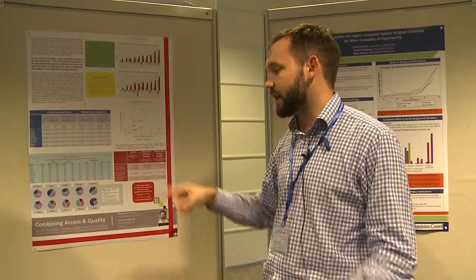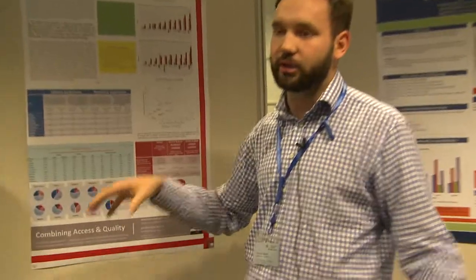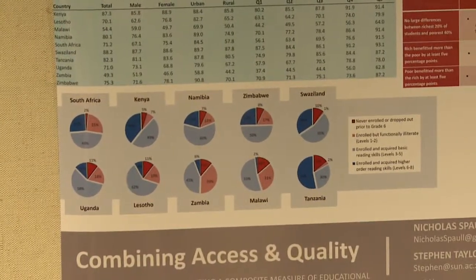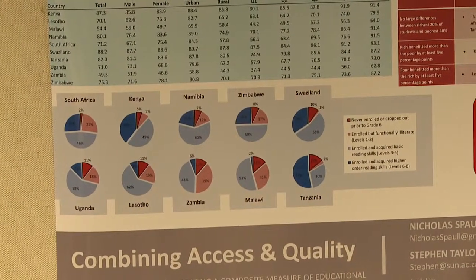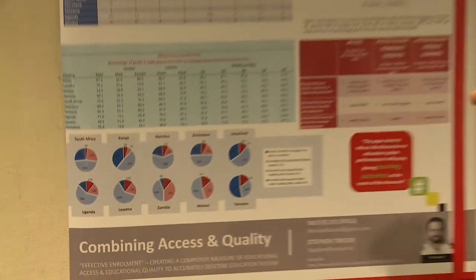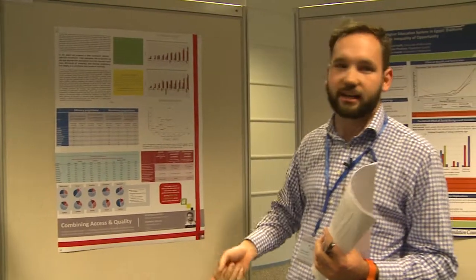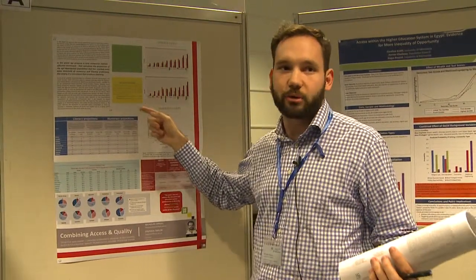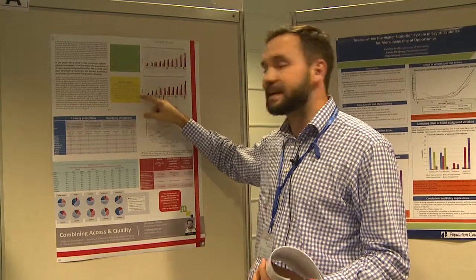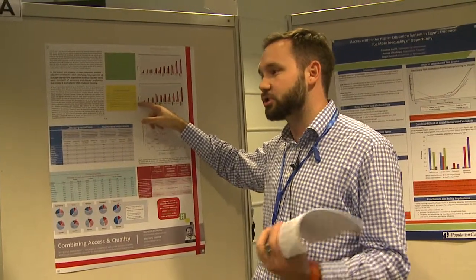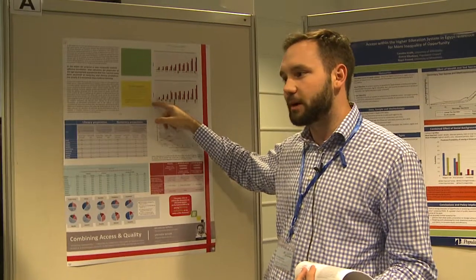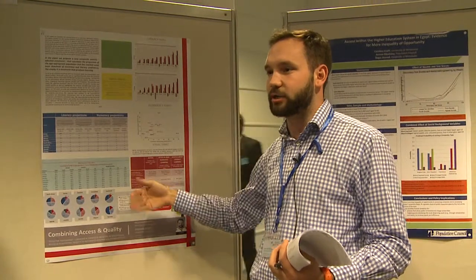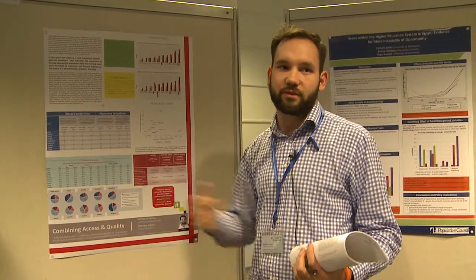As you can see in these graphs, we break down the grade 6 age population by whether children are in school and, if they are, whether they've acquired basic literacy and numeracy skills. For example, in South Africa the traditional net enrolment rate is 98%, but only 71% of grade 6 age children are actually literate — so the 98% enrolment rate overestimates the success of the South African schooling system.